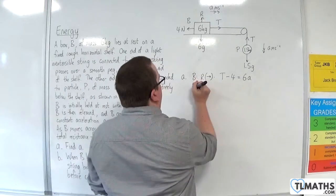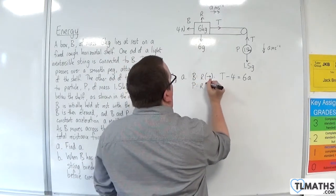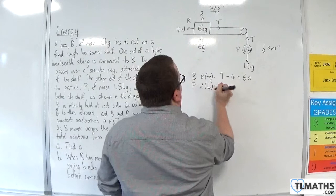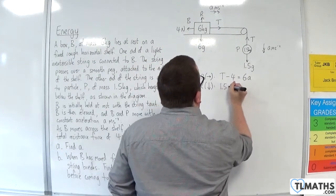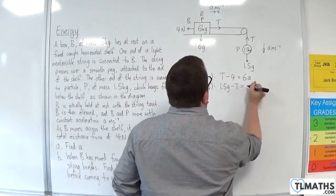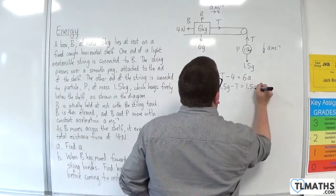And then for particle P, I'm going to resolve, taking downwards as positive. And I'll have 1.5g, take away the tension, is equal to the mass, times the acceleration.